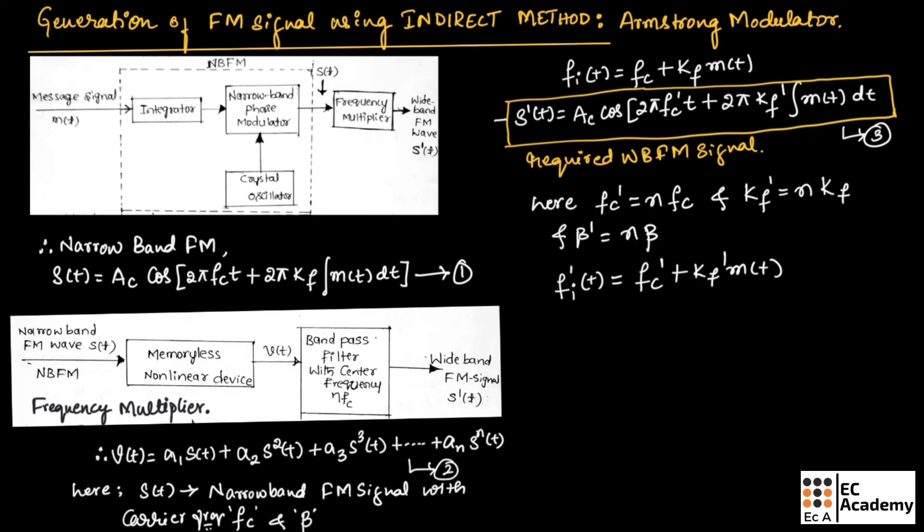Therefore, we can say we have obtained a required wide band FM signal using this block diagram. This is about indirect method of generation of FM signal or Armstrong modulator. I hope you have understood the topic. Thank you.